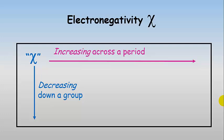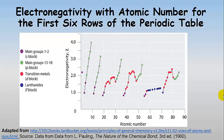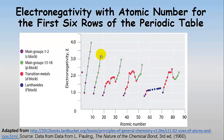Electronegativity follows the same trend as electron affinity — it increases across a period. Here's a chart showing the variation in electronegativity using Pauling electronegativities. The trend is increasing as you go across a period, then you pretty much start over when you go to the next row. There are a few little jigs and jags when you go through the transition metals, but you won't be responsible for that detail.